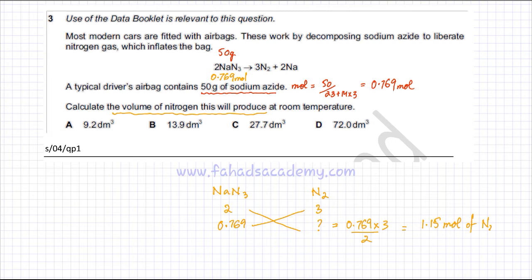Now, he's asking for the volume of nitrogen gas that would be produced. To find the volume of gas, volume of gas is the moles of gas, which is 1.15 moles.